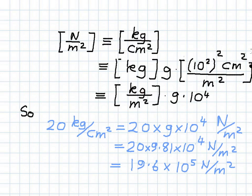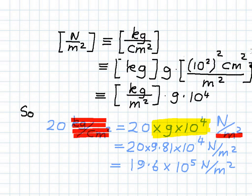So looking at our question: 20 kilograms per cm squared, we multiply by G and 10 to the power 4, and we get Newton per meter squared. To highlight this, this will be our conversion factor for all conversions from kilogram per cm squared to Newton per meter squared. Following through the next two lines, we get 19.6 times 10 to the power 5 Newton per meter squared. But we are still required to convert to bar.